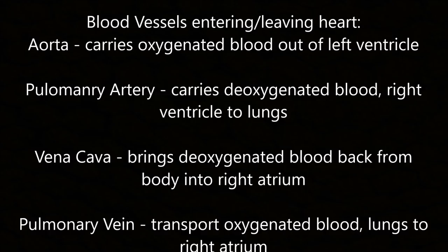Blood vessels entering and leaving the heart: the aorta carries oxygenated blood out of the left ventricle. The pulmonary artery carries deoxygenated blood from the right ventricle to the lungs. The vena cava brings deoxygenated blood from the body into the right atrium. The pulmonary vein transports oxygenated blood from the lungs to the left atrium.